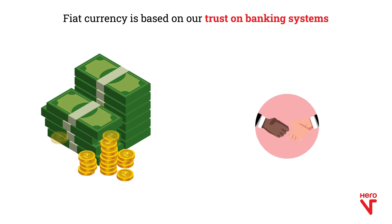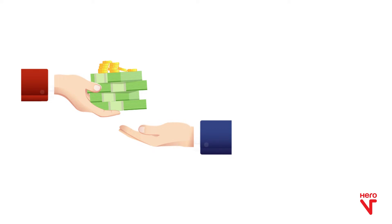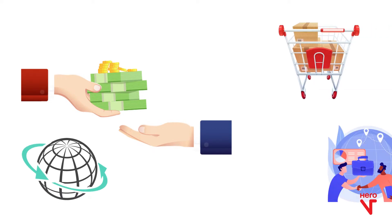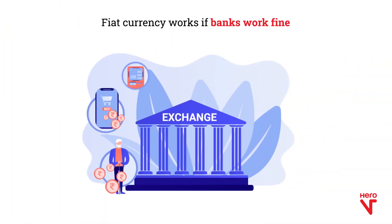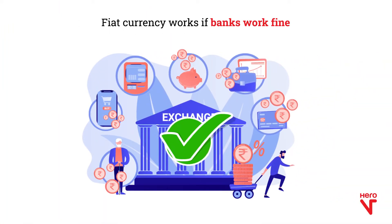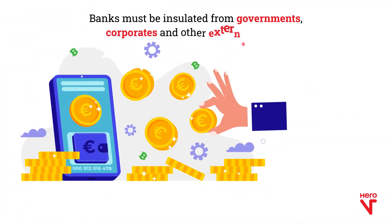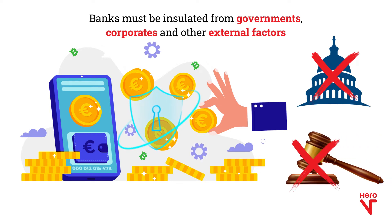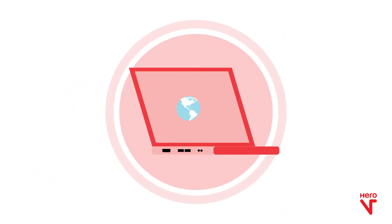The argument for cryptocurrency has often been centered around its decentralized nature. The reason we use fiat currency is because of our trust in the banking system — the trust that this currency will always be legal tender and is a universally accepted mode of payment for any and all goods and services. This system works as long as central banks do their job right. Proponents of digital currency state that it is free from governmental encroachment, essentially keeping it insulated from external control or influence.